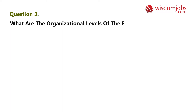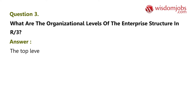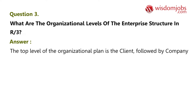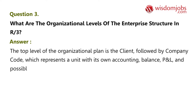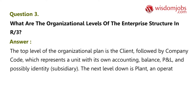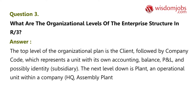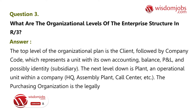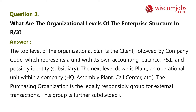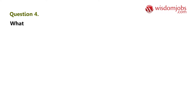Question 3: What are the organizational levels of the enterprise structure in R3? Answer: The top level of the organizational plan is the client, followed by company code, which represents a unit with its own accounting, balance, P&L, and possibly identity subsidiary. The next level down is plant, an operational unit within a company such as HQ, assembly plant, or call center. The purchasing organization is the legally responsible group for external transactions, further subdivided into purchasing groups.